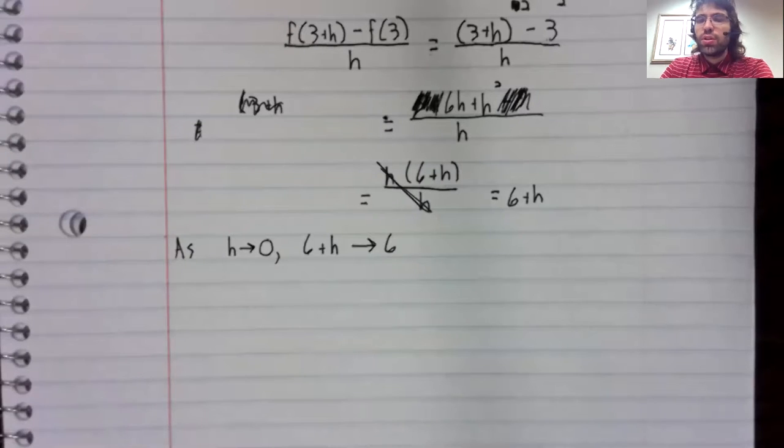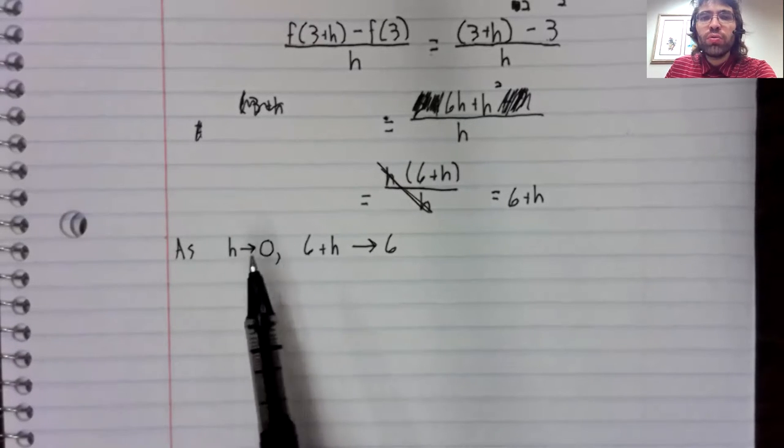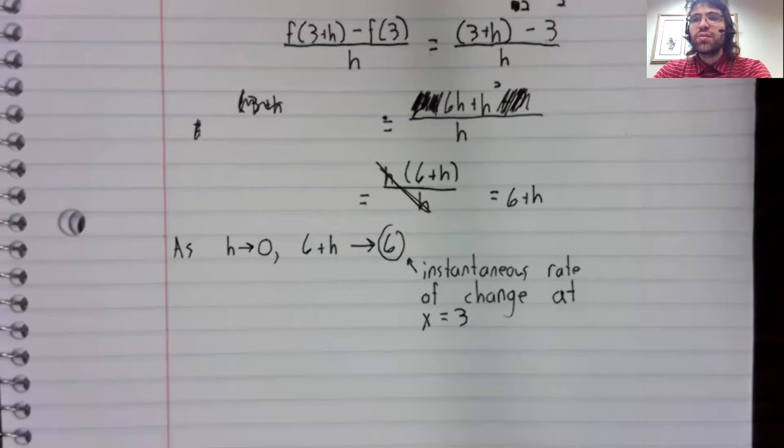So writing down what we just said: as h approaches zero, six plus h approaches six. And this six is the instantaneous rate of change we were looking for.